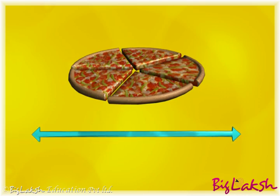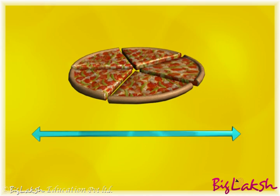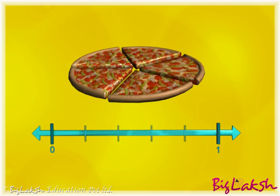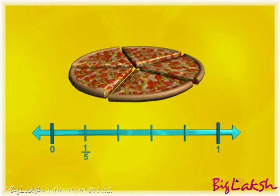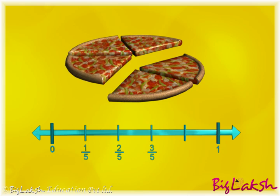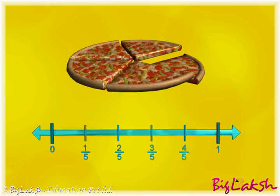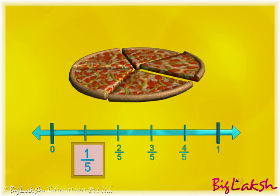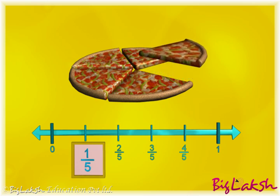To represent 1 by 5 on the number line, you simply divide the number line between 0 and 1 into 5 equal parts. Mark the first division by 1 by 5, similarly mark the second division by 2 by 5, the third by 3 by 5 and so on. Now you can see that the first division, that is 1 by 5, represents one piece of the pizza on the number line.